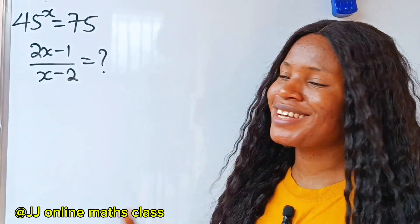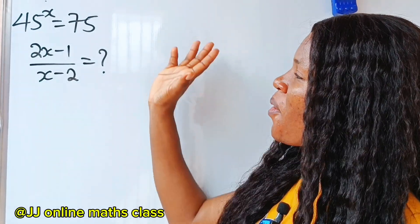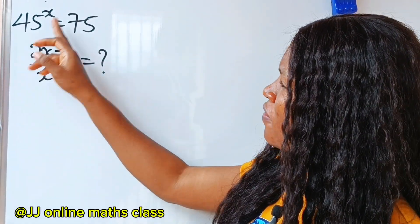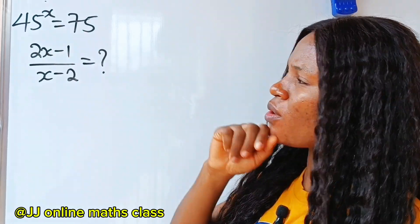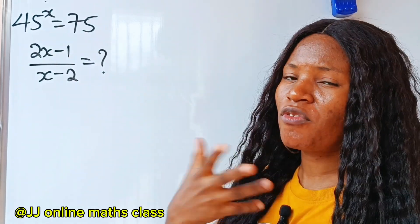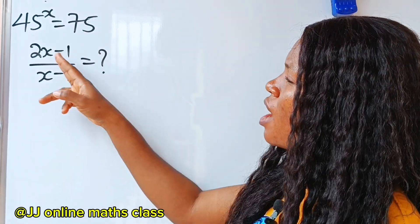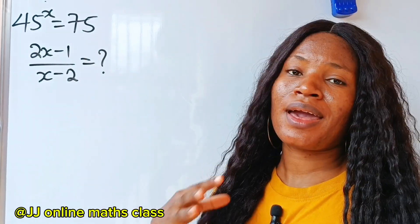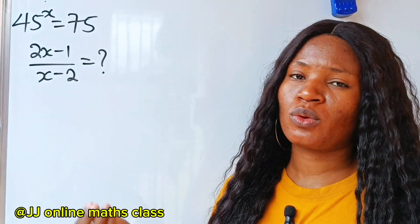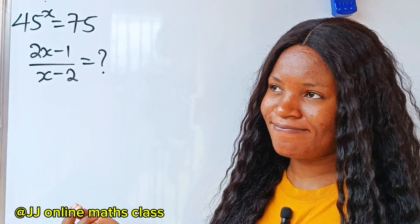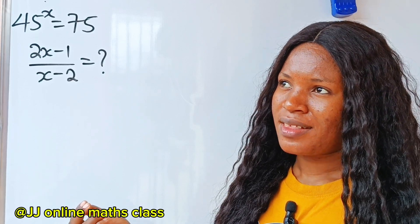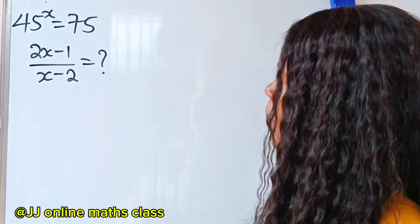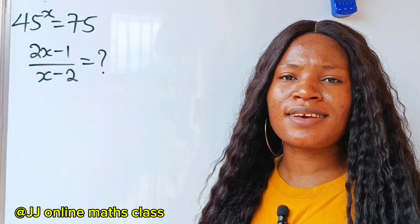Welcome to this channel. We are asked: if 45 to the power of x equals 75, what is (2x minus 1) divided by (x minus 2)? That seems somehow tactical, but let's see how this goes.